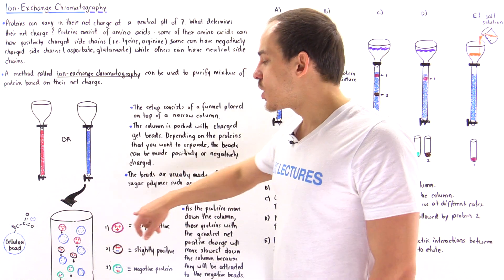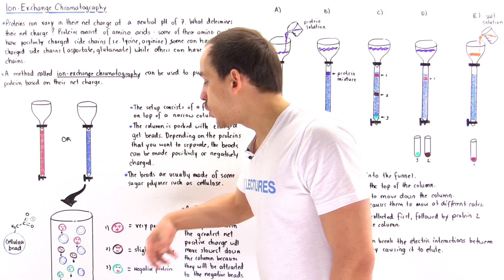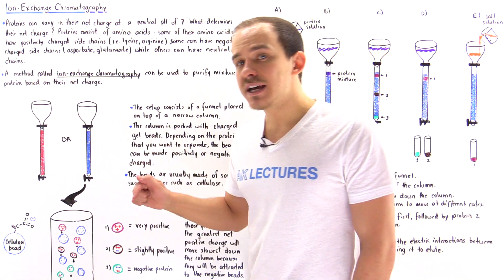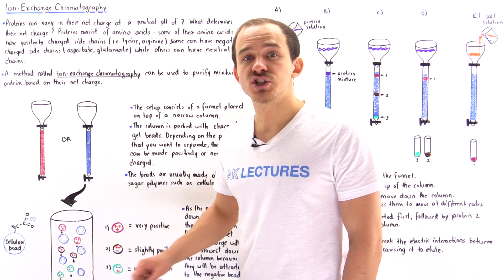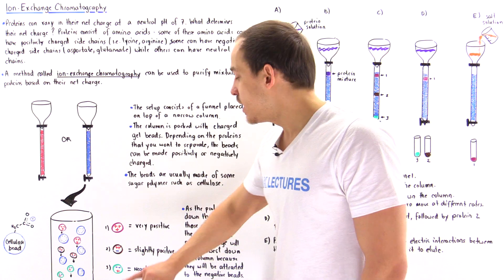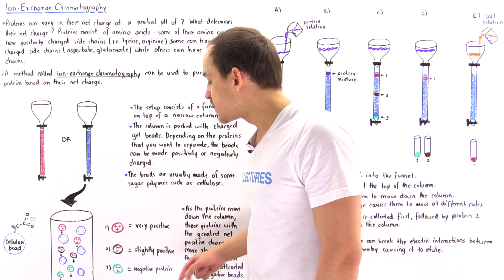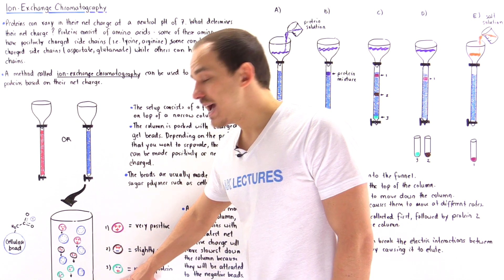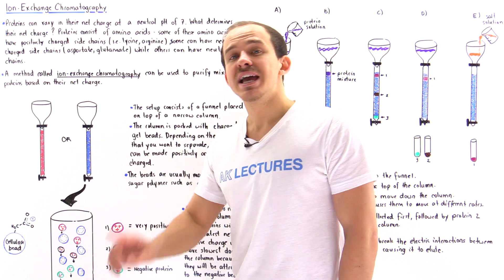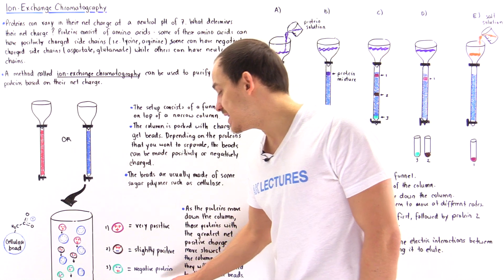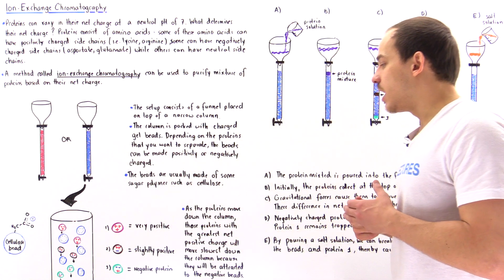Protein number one has a net positive charge of positive three, making it very positive. The second protein shown in brown contains two positive charges and one negative charge, giving it a net charge of positive one — so it is only slightly positive. The final protein shown in green contains one positive charge and two negative charges, giving it a net charge of negative one, making it a negatively charged protein.